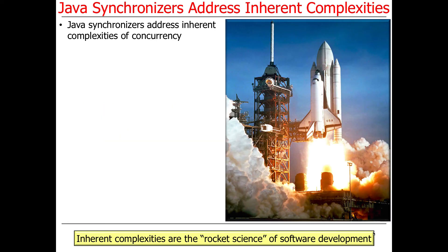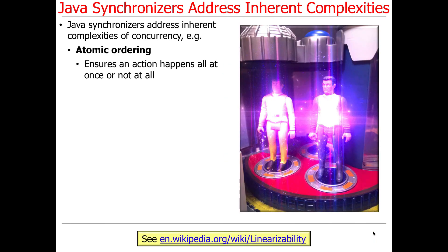We use synchronizers to address certain inherent complexities of concurrency. There's accidental complexity, which typically arises when we use low-level tools or methods that lack proper type safety or type checking. Inherent complexities are fundamental to the domain — they're the rocket science of software development. One of them is atomic ordering, which is important when you want to ensure an action either happens or doesn't — like a transporter beam or Harry Potter disapparating.